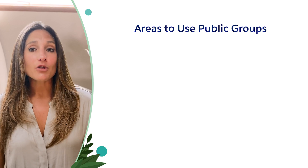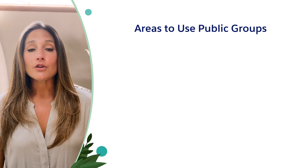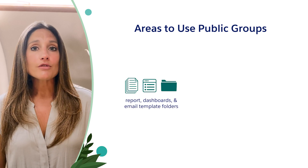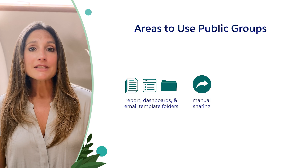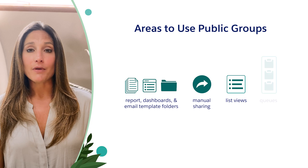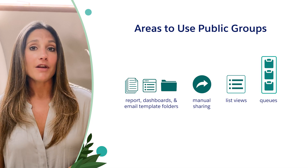There are other areas where public groups are used to grant access. Those include granting access to report, dashboard, and email template folders. Record owners can also manually share their records to public groups, and you can use public groups to share list views to users within a public group. Queue members can also be comprised of a public group. To recap, public groups are created using a combination of individual users, other public groups, roles or territories, and roles or territories and their subordinates. Public groups are commonly used when defining sharing roles to make them easier to create, understand, and keep things simple.